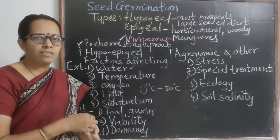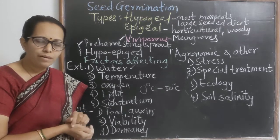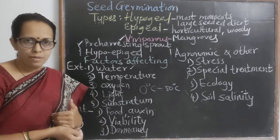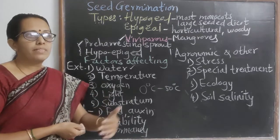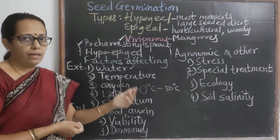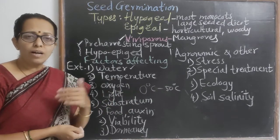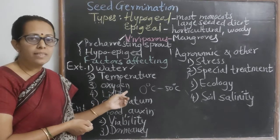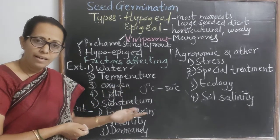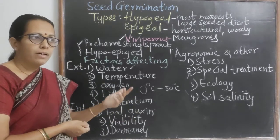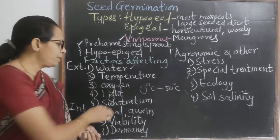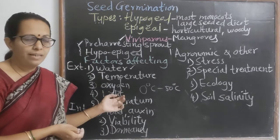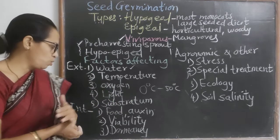The next external factor is light. Light is not a favorable factor for germination. Seeds kept in darkness sprout earlier compared to those exposed to light. For sprouting, light is not necessary; on the contrary, light hampers the speed of germination and makes sprouting slow.